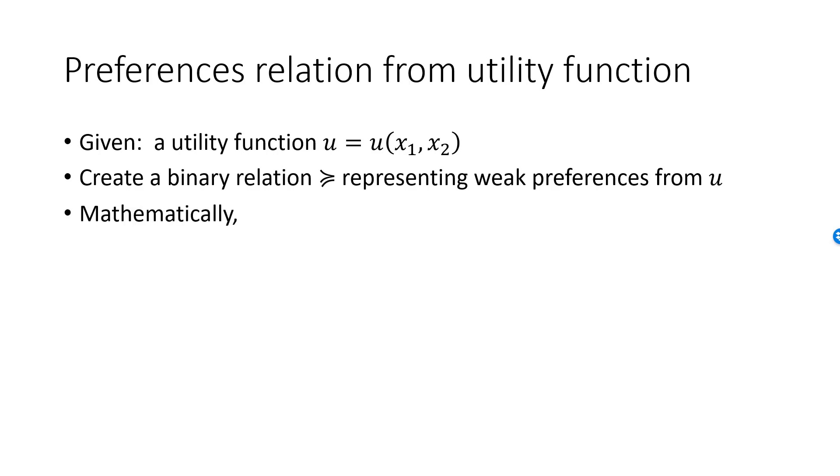Mathematically this is how we do it. Just take any two bundles. We have an X bundle consisting of x1 units of the first good and x2 units of the second good. We have a Y bundle with y1, y2 units of each good. To create the weak preference relation, I need to be able to compare these two bundles.